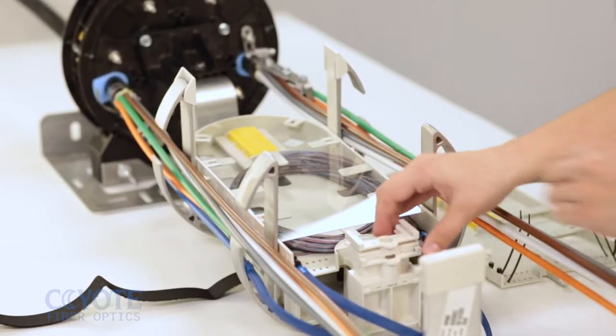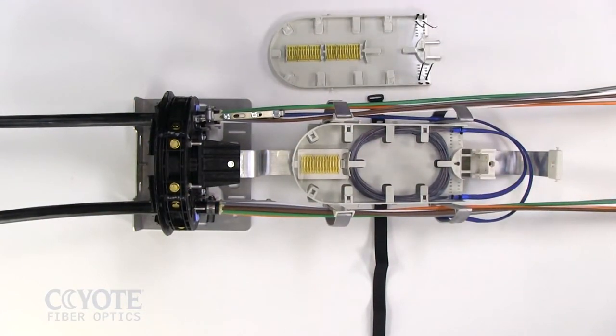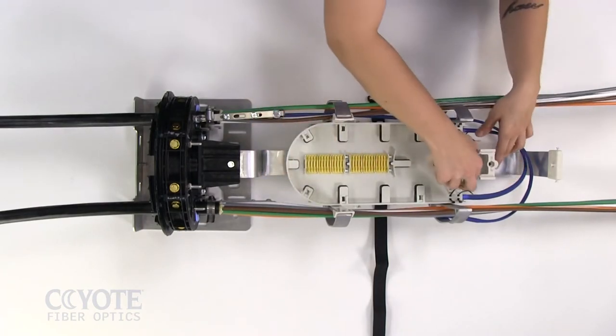Add an additional splice tray by installing the hinge bracket onto the existing hinge bracket. Install a prepared thin profile tray into the hinge bracket.